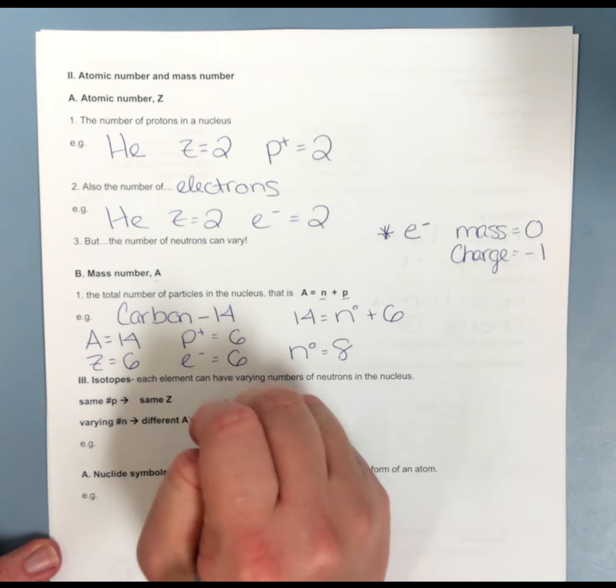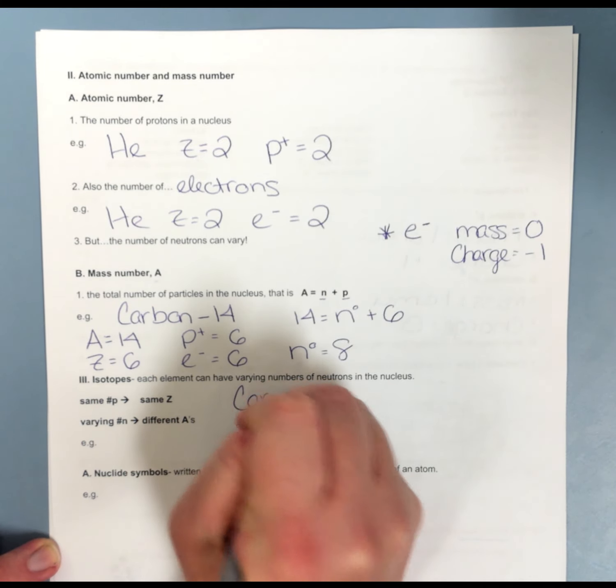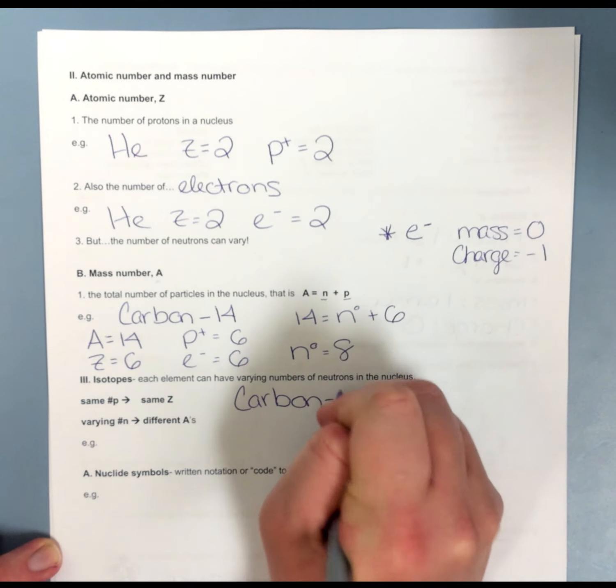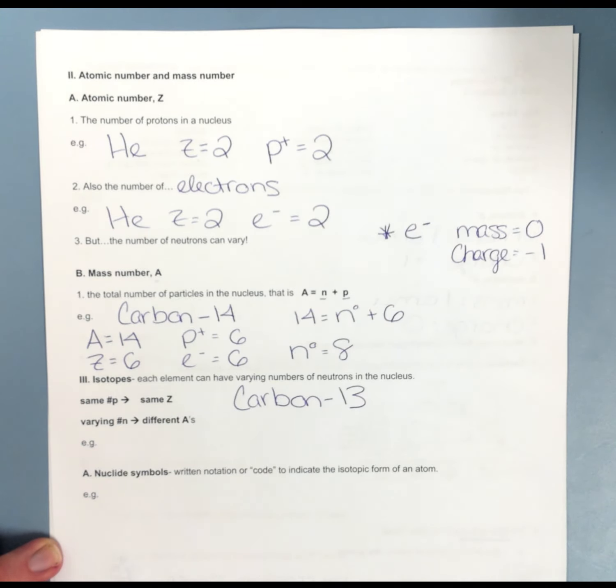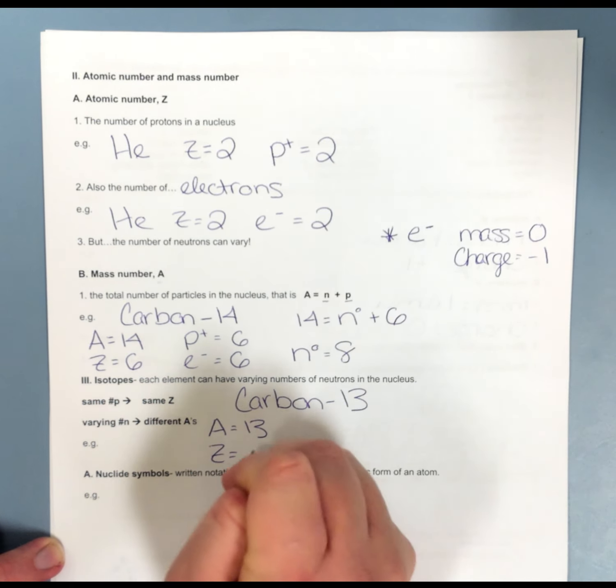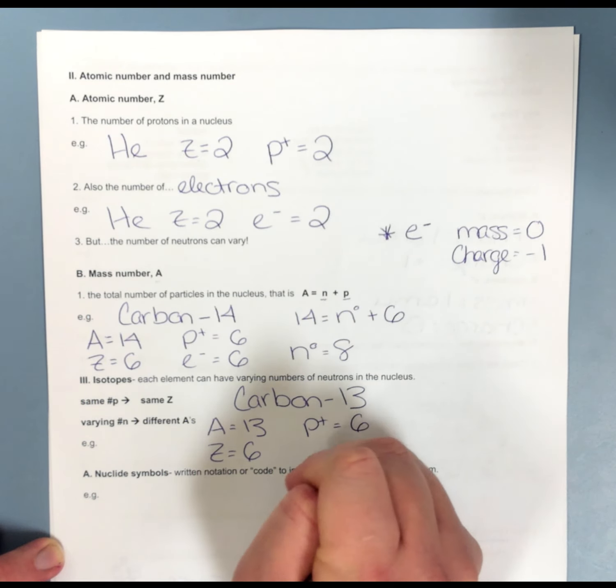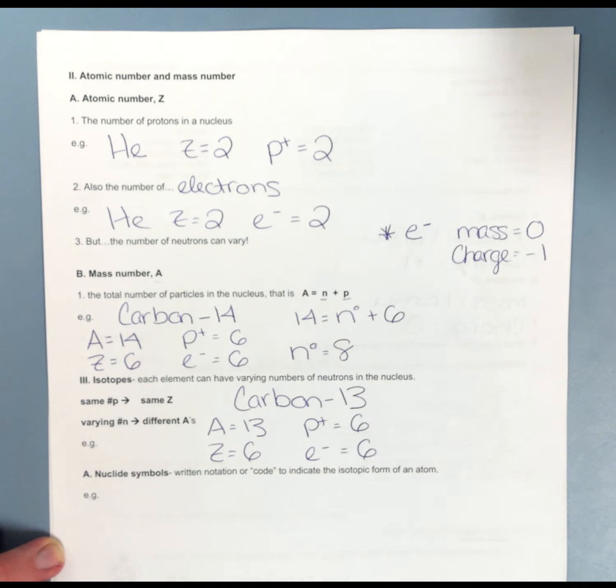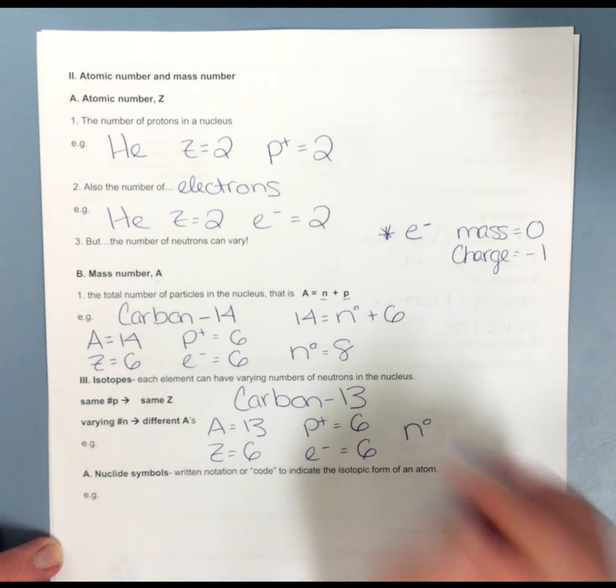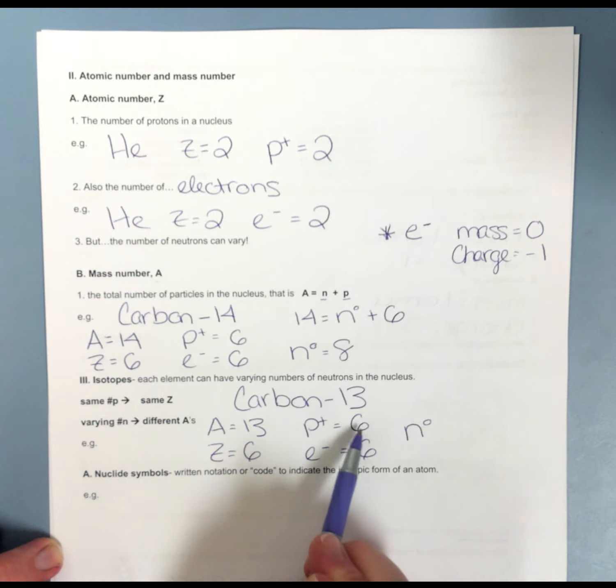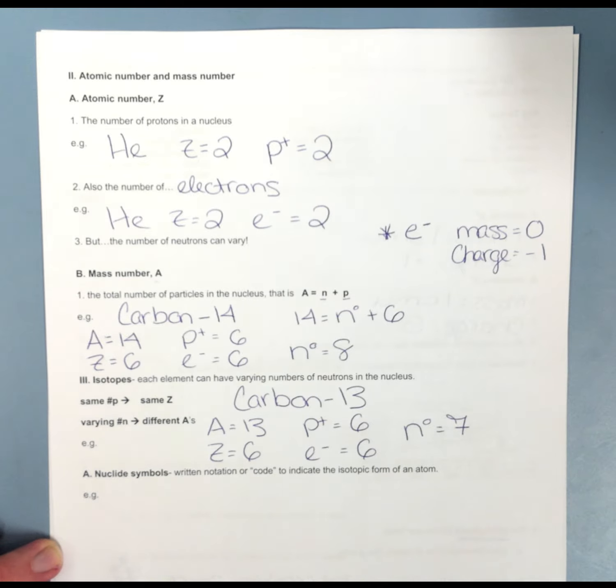In this example above, I did carbon-14. But we could also have carbon-13 or carbon-12. Here, carbon-13, my mass number is 13. My atomic number is still 6. My number of protons is still 6. My number of electrons is still 6. But my number of neutrons, well, 13 equals 6 plus neutrons. For carbon-13, I only have 7 neutrons.